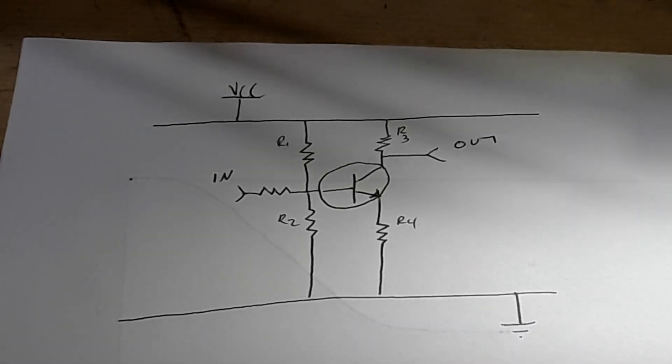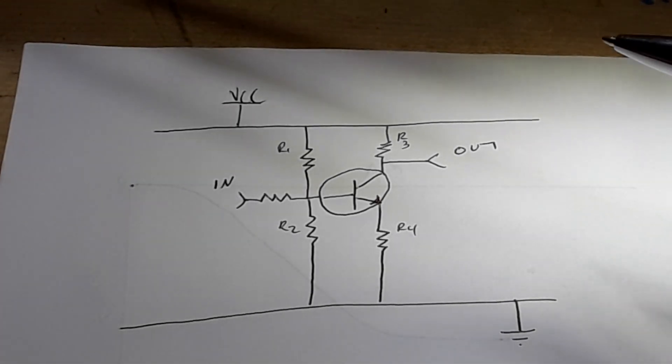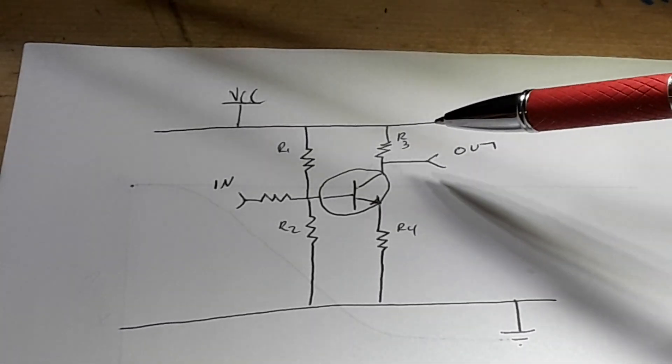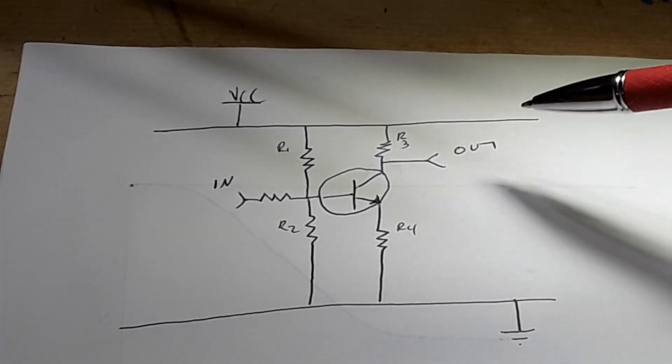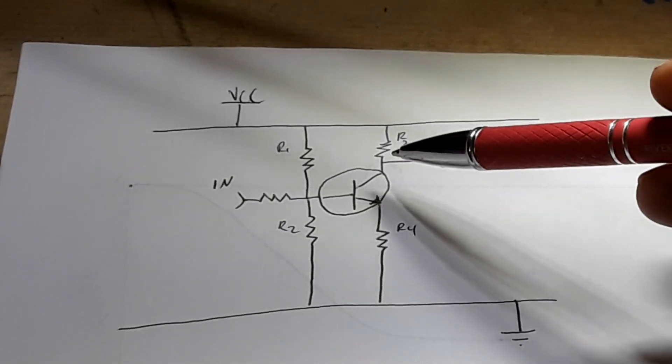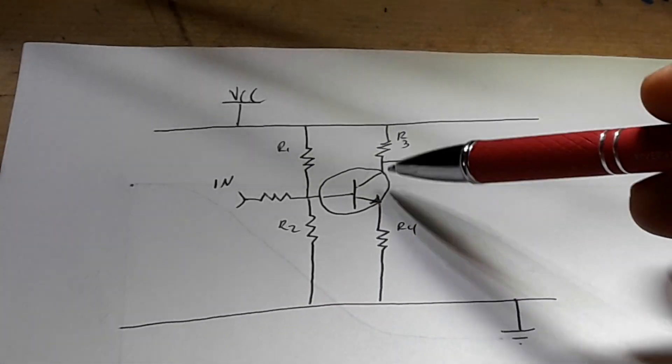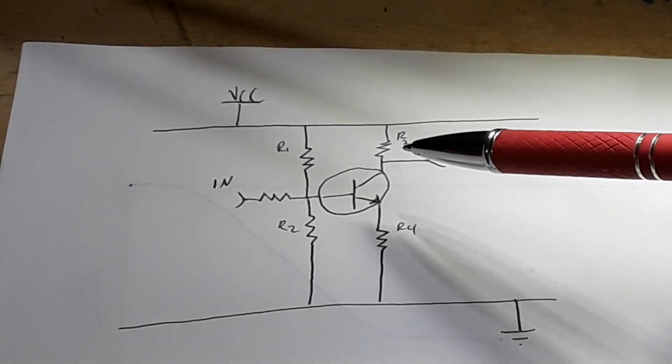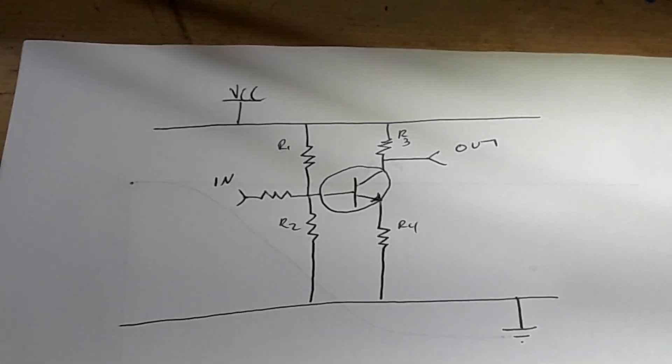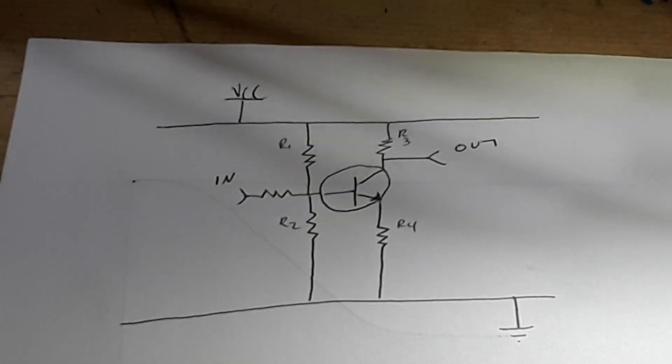Tim's just learning about electronics and going over some schematics. He's getting an understanding of transistors and understands the transistor is basically a switch. He says if the transistor is a switch, what are all these resistors for? What are they doing? I told him they are just helping to balance out how the transistor works.